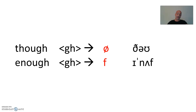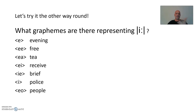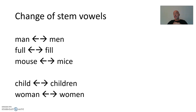Or consider the other way around: one phoneme — the long E — and how many graphemes there are for it. 'Evening' (E), 'free' (double-E), 'tea' (EA), 'receive' (EI), 'breathe' (IE), 'police' (single E), and even 'EO' for 'people'. And change of stem vowels: man/men, full/fill, mouse/mice, child/children, woman/women. You will be able to explain all these things once you've gone through this lecture.